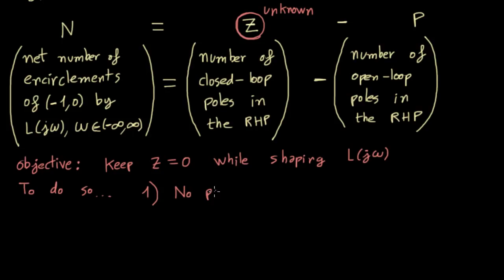As a consequence, we must always ensure two things. First, there are no net positive encirclements of the critical point. If there are any, then n is greater than zero, and since p cannot be lower than zero, then z is greater than zero, which means that the closed loop system is unstable.